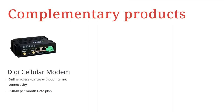Additional products may be purchased to enhance the system capabilities. The Digi cellular modem is used to bring internet activity to remote locations for use of the Fronius Solarweb monitoring. A 650-megabyte cellular plan is recommended to pair with the cellular modem to deliver monitoring data remotely without the need for an internet connection.